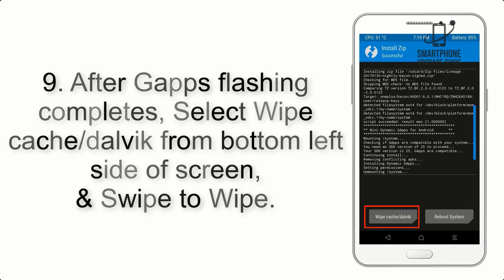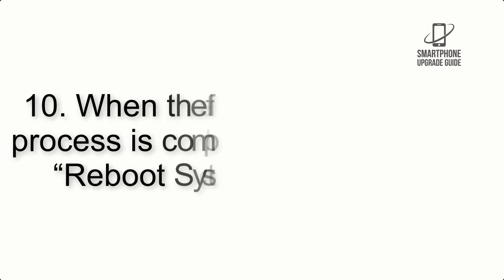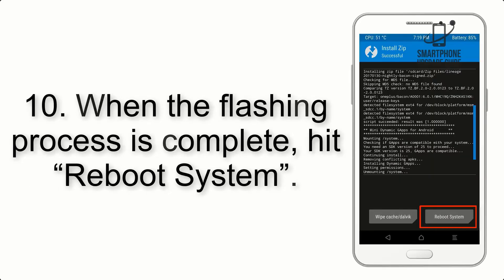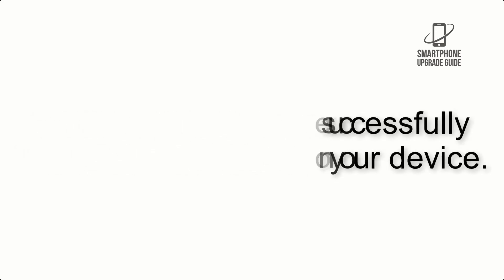Step 8: Flash the GApps zip package in the same manner. Step 9: After GApps flashing completes, select Wipe Cache and Dalvik from the bottom left side of the screen and swipe to wipe. Step 10: When the flashing process is complete, hit Reboot System. That's it — you have successfully installed the ROM on your device.